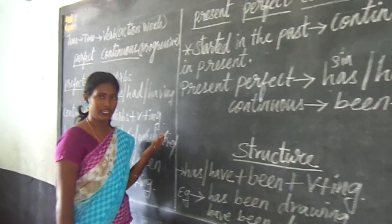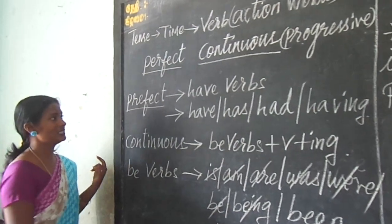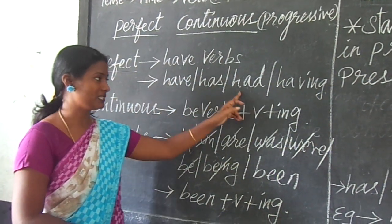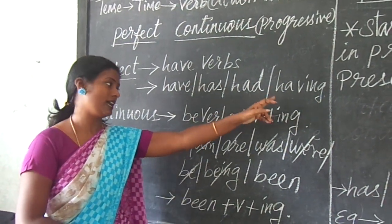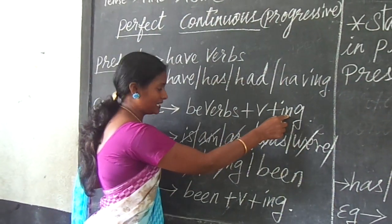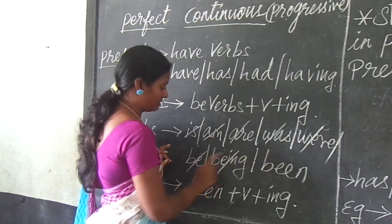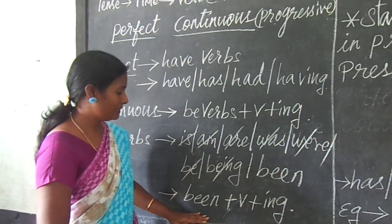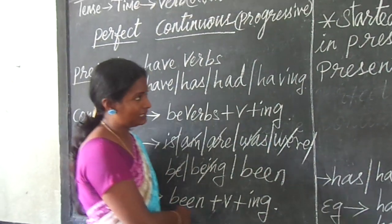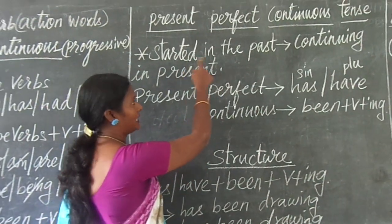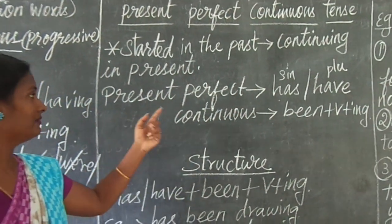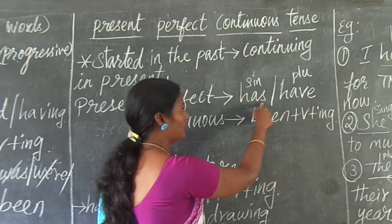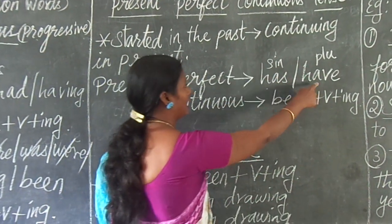So let's review again. Today we saw what is perfect continuous tense. For perfect continuous tense, the very basics are: for perfect, we need have verbs — that is have, has, had, or having. And for continuous, we say it is be verbs plus verb plus ing. The be verbs are is, are, was, were, be, being — but since it is perfect continuous, only 'been' is enough. So the structure is: been plus verb plus ing. For present perfect continuous, we need only has or have. Has is for singular and have is for plural.